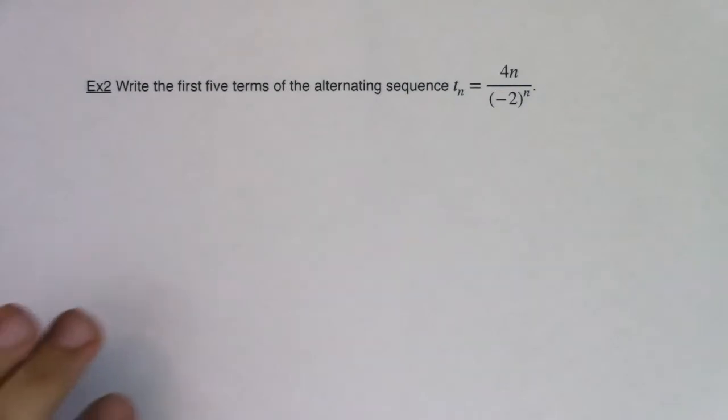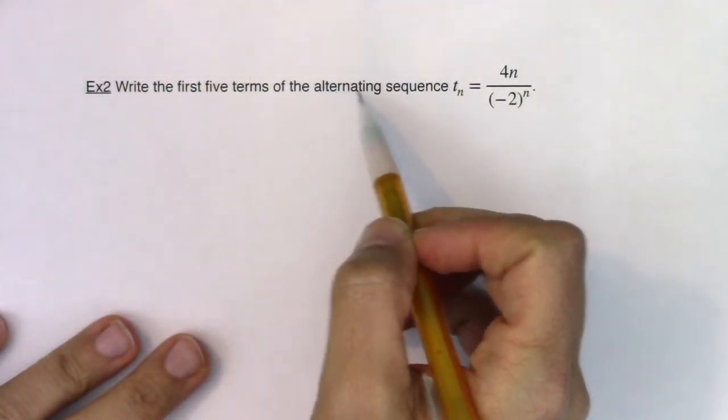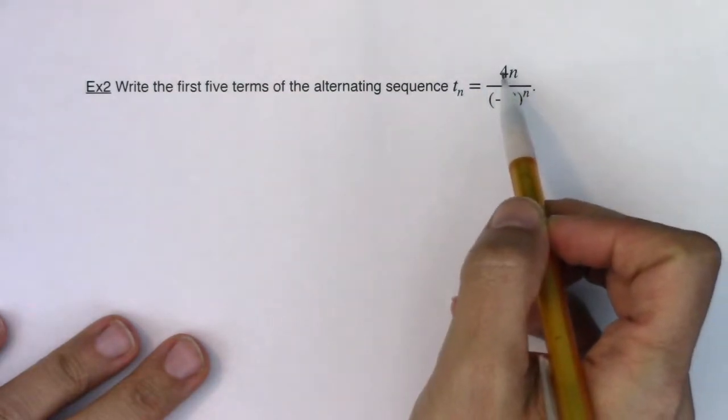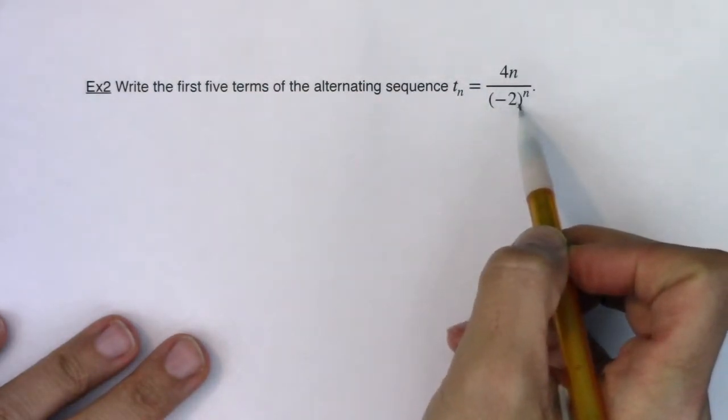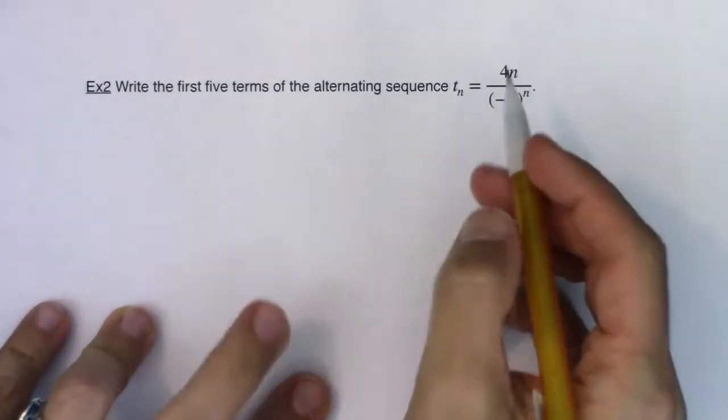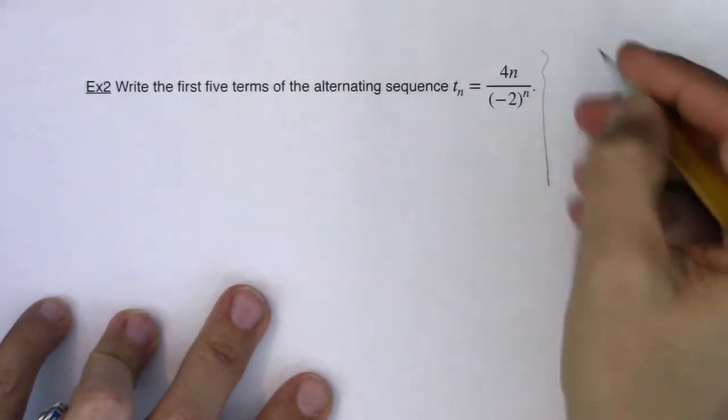Hey, Math 31. Welcome to Example 2. So let's see if we can write the first five terms of the alternating sequence t sub n equaling 4n over negative 2 to the n. And if you're wondering why this is an alternating sequence, I don't see my alternator of negative 1 to the n or negative 1 to the n plus 1.